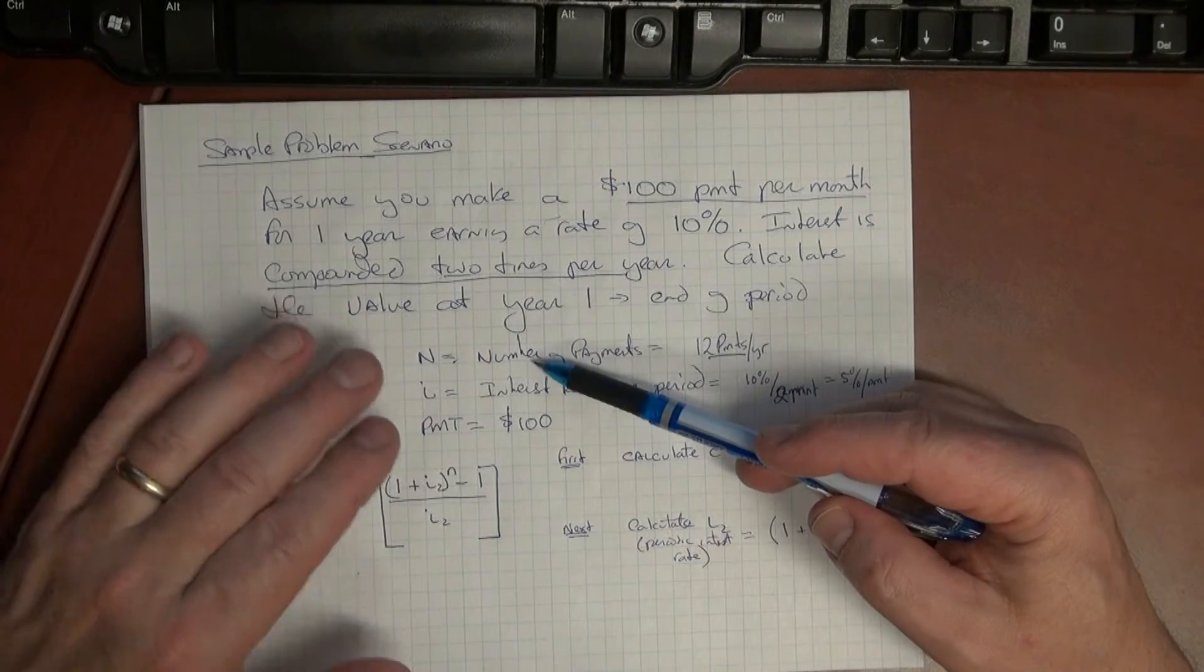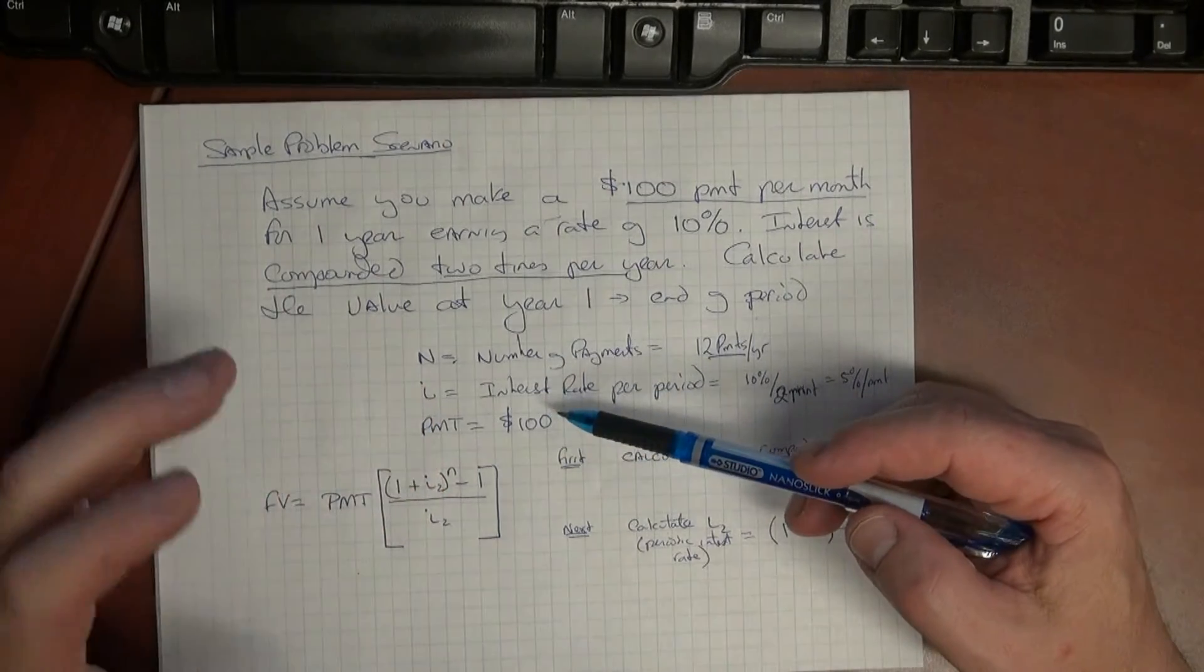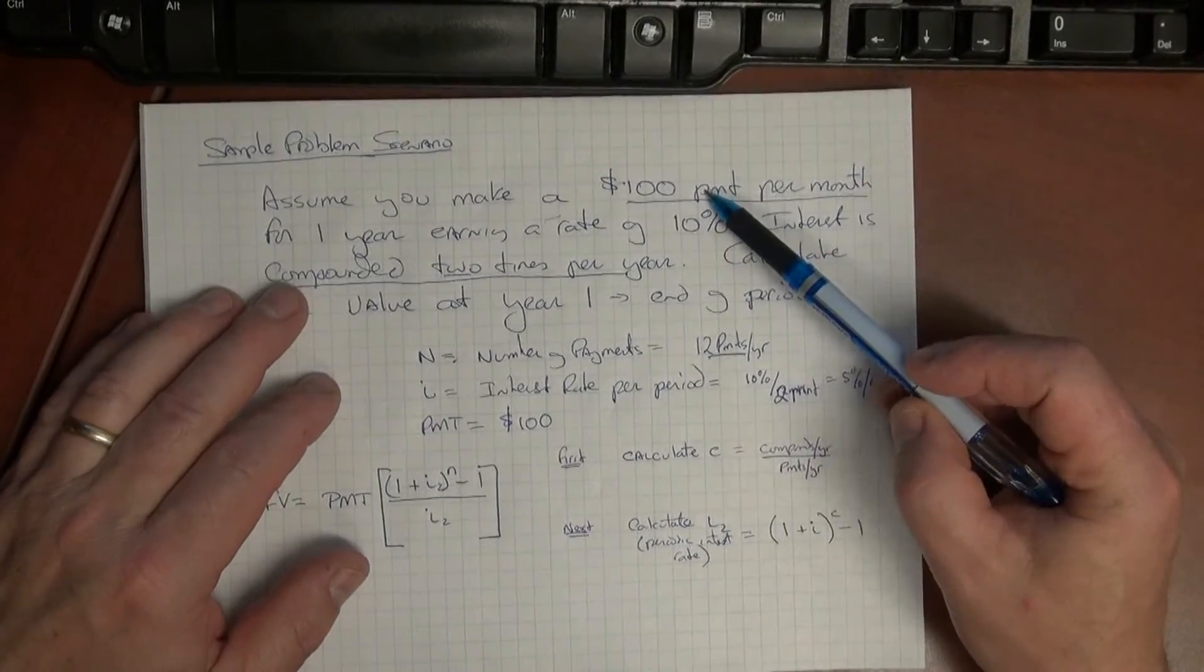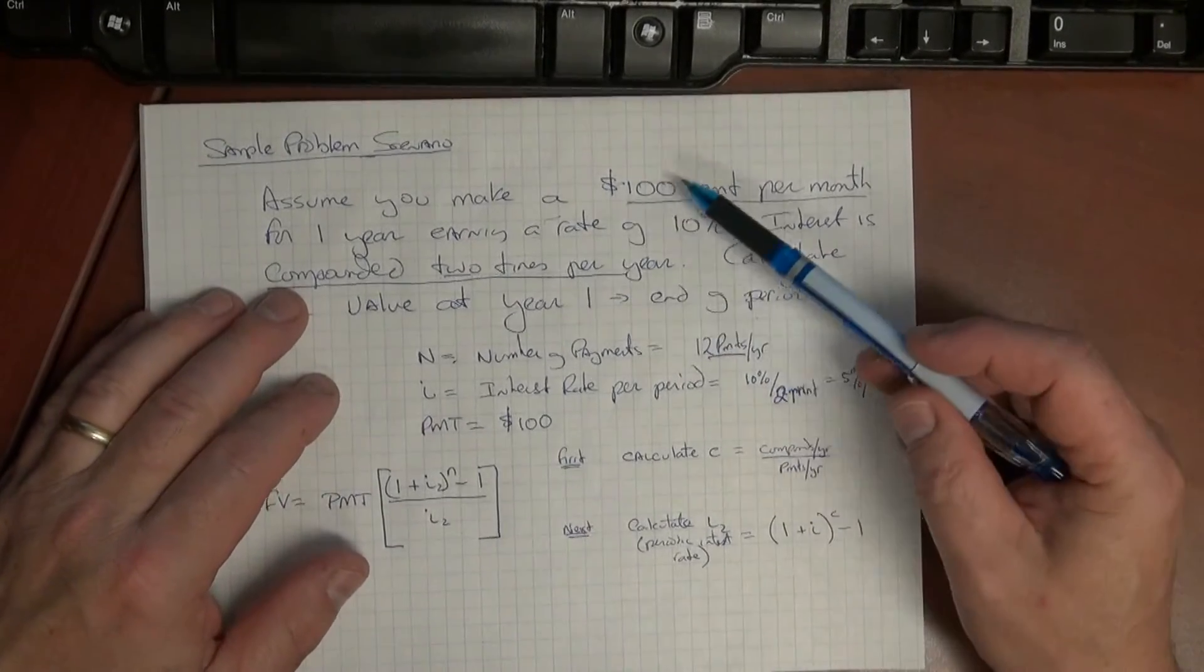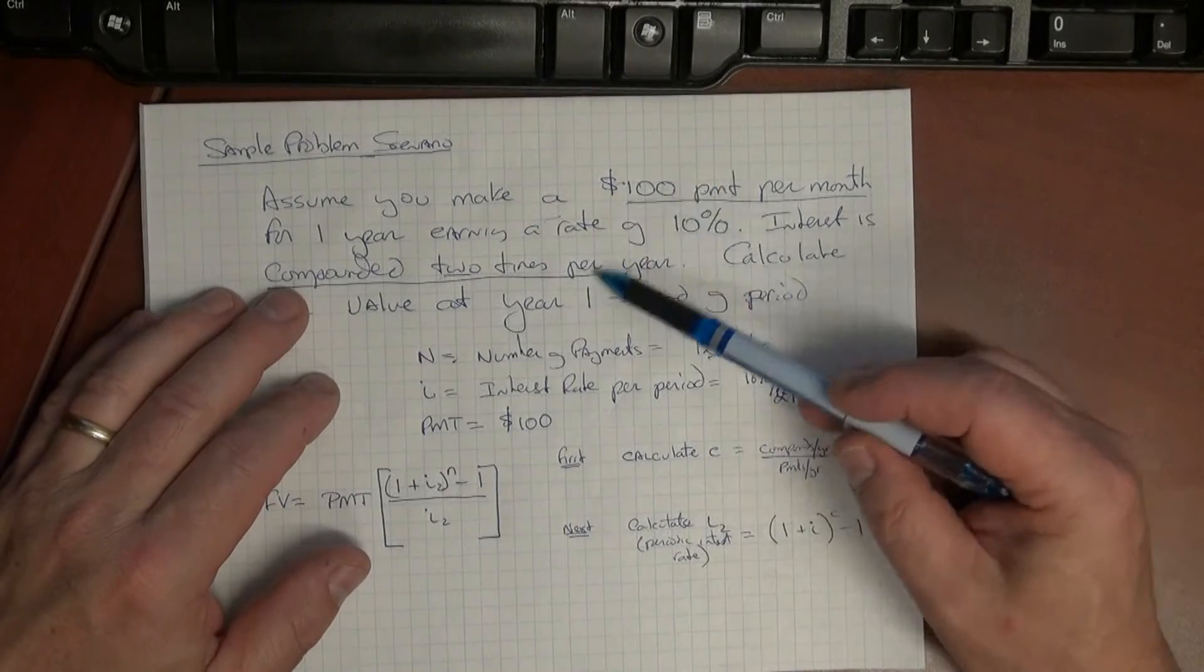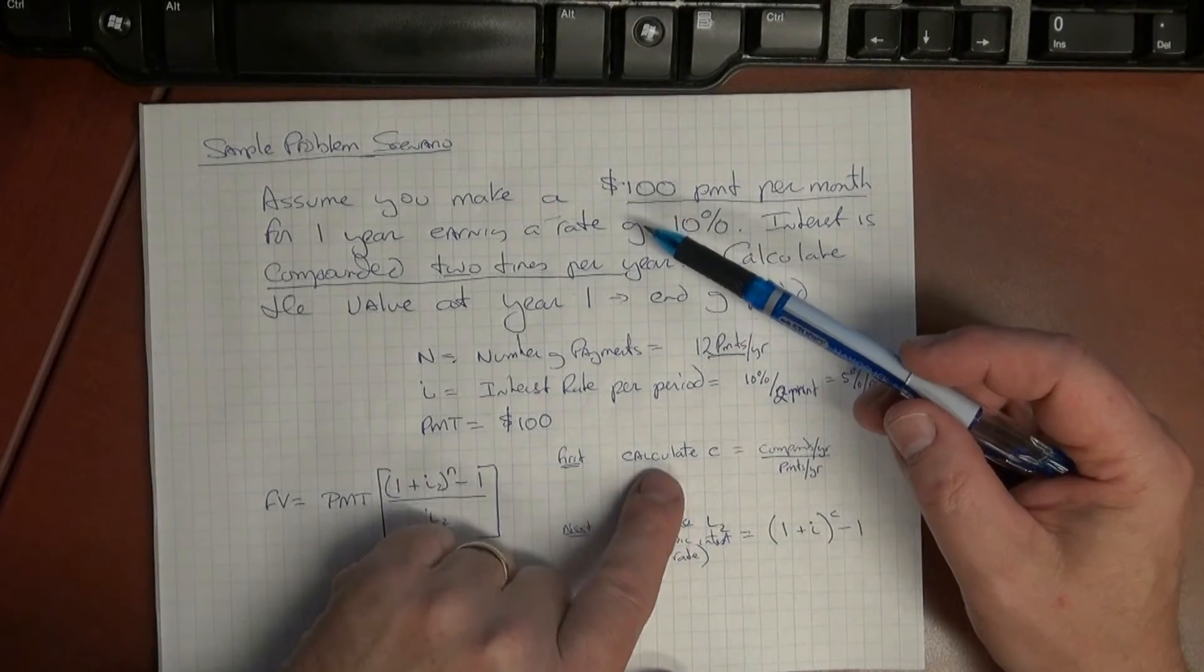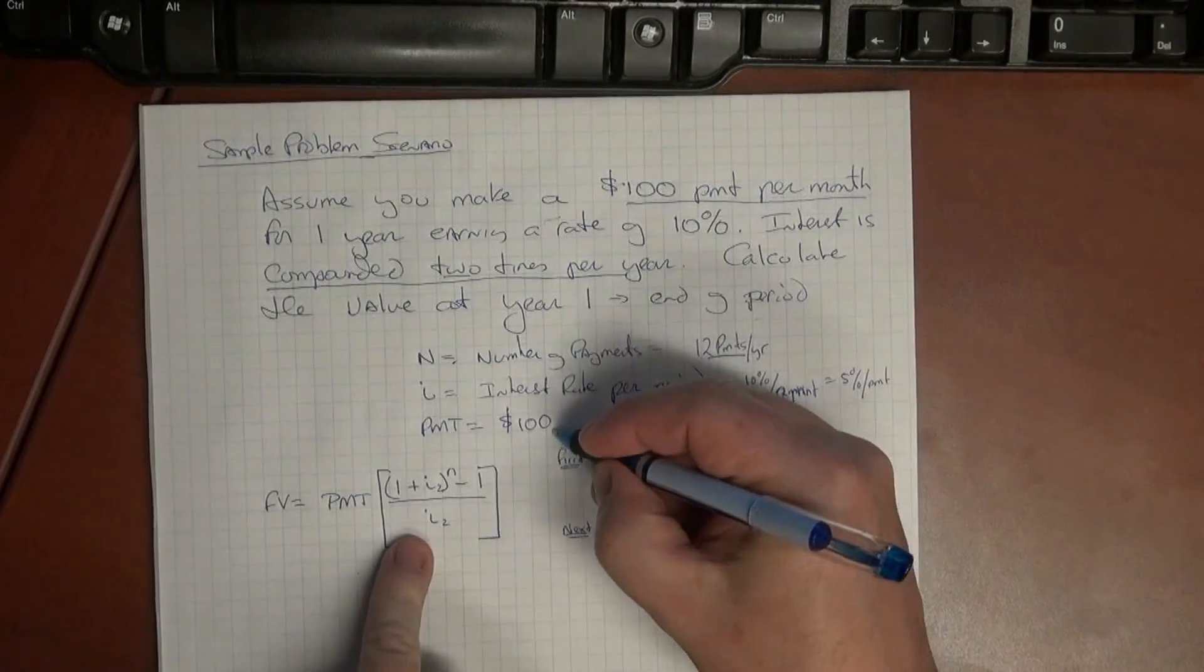Once you do that then what we have to do is to be able to make an adjustment for the fact that the interest rate and the payment compounding is different. The interest payment and the compounding periods are different. So all we use is we need to do a little sub calculation right here.